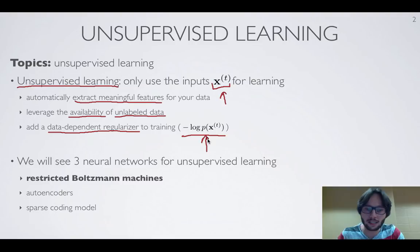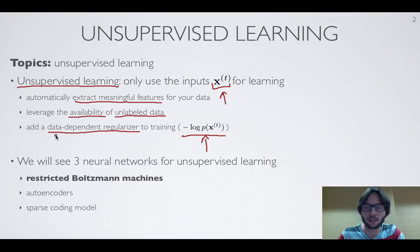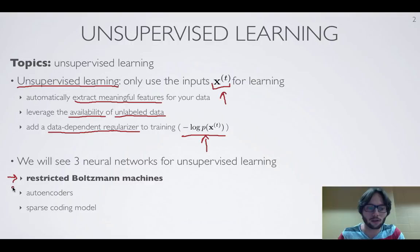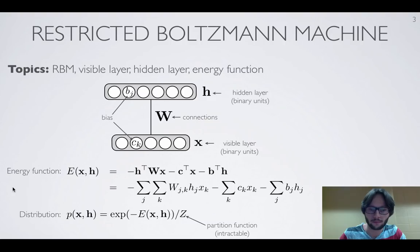In particular, this term — we can actually compute it for an input vector even if we don't have a label for it. So this regularization can help us perform a classification or any other prediction problem when we have unlabeled data. In the following videos, we'll see three different neural networks for unsupervised learning, concentrating first on the restricted Boltzmann machine.